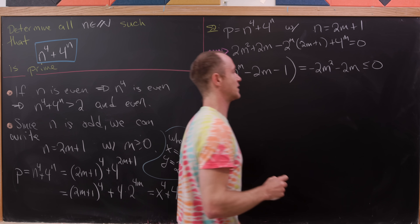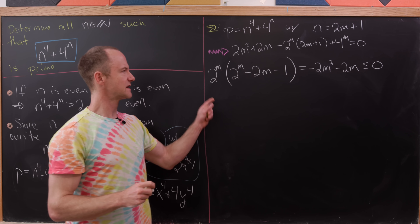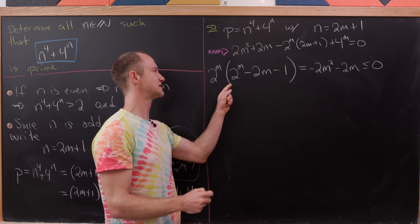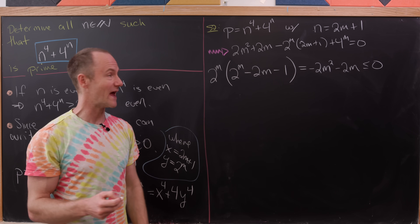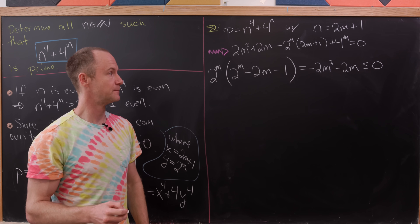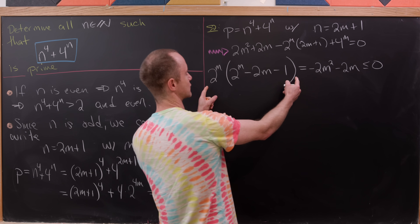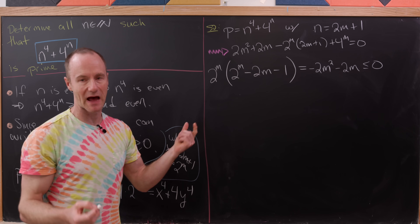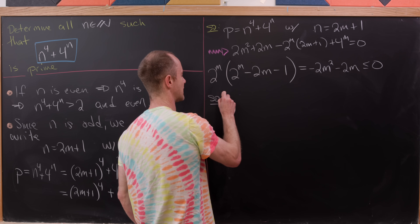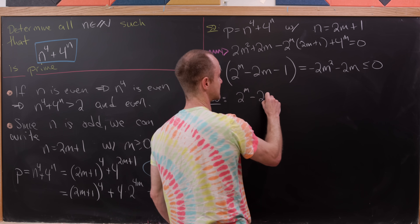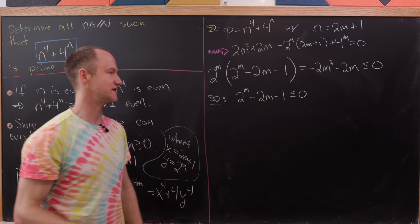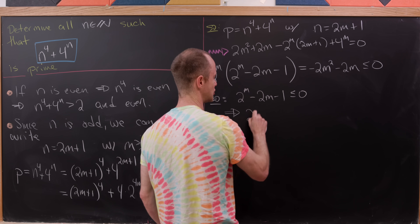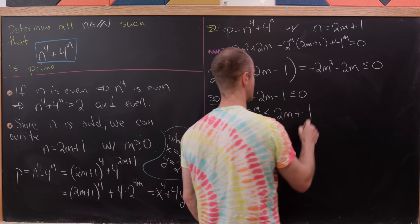The term 2 to the m minus 2m minus 1 is almost always positive because the exponential grows way faster than 2m minus 1. To make the left-hand side negative — since 2 to the m is always positive — we need 2 to the m minus 2m minus 1 to be less than or equal to zero. In other words, 2 to the m must be less than or equal to 2m plus 1.